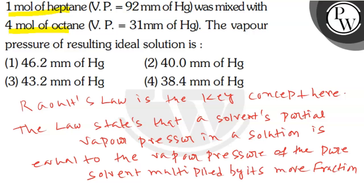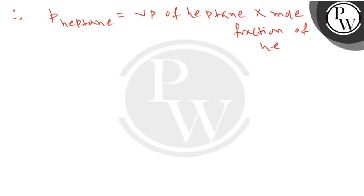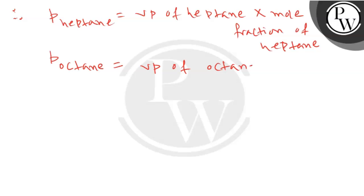Here in this question, we have heptane and octane. The partial pressure of heptane is equal to the vapor pressure of heptane multiplied by the mole fraction of heptane. Similarly, the partial pressure of octane equals the vapor pressure of octane multiplied by the mole fraction of octane.